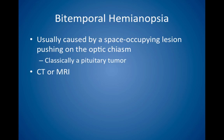Bitemporal hemianopsia, the loss of peripheral vision in both eyes, is caused by a space-occupying lesion pushing on the optic chiasm, classically a pituitary tumor, until proved otherwise. Order a CT or MRI scan of the brain.